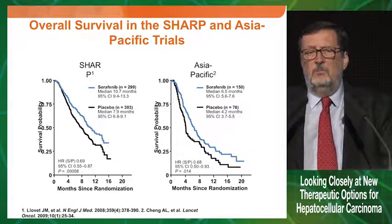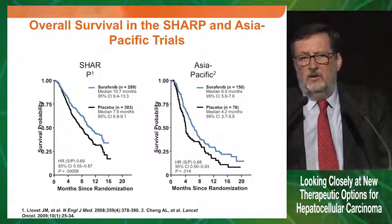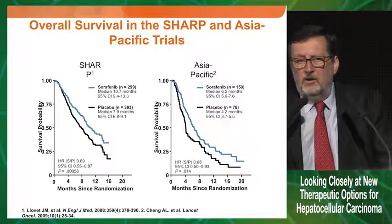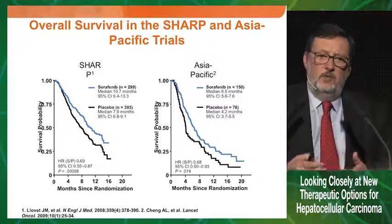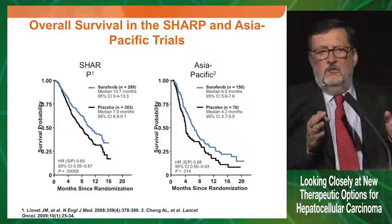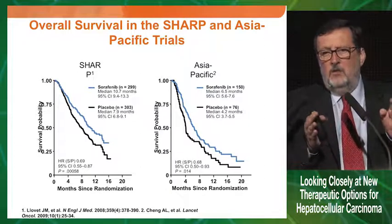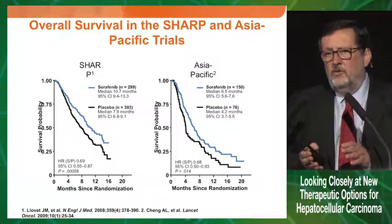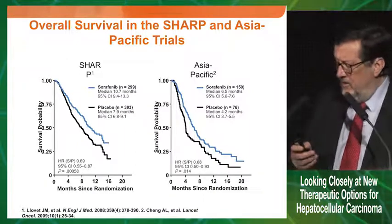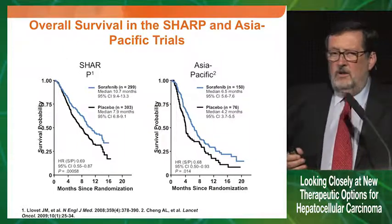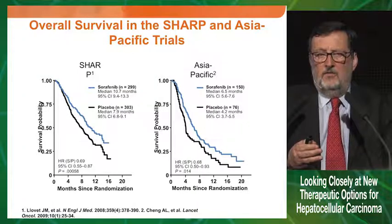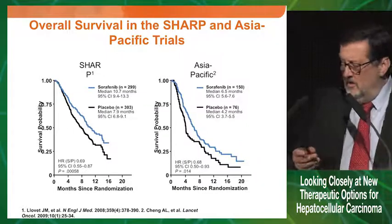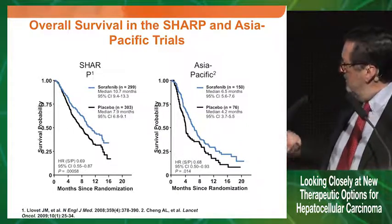All this thinking about the impact of liver function on outcome was already there when we ran the SHARP trial. There was a claim to incorporate Child-Pugh B patients because they are more frequent and we would recruit faster. We said no. If we bring in decompensated patients, we are going to have a competing risk of death from cirrhosis, and even if sorafenib is beneficial, we will have a confounder that may kill the trial — make it negative. And clearly this was correct: we captured survival benefits and had almost no deaths related to liver failure prior to progression.